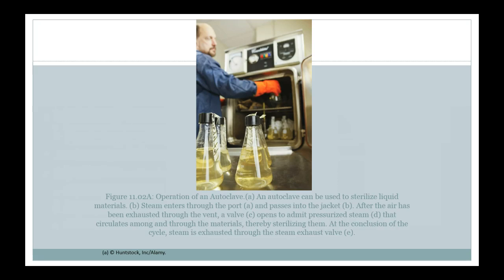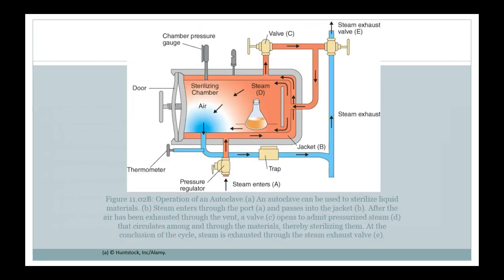This is what an autoclave looks like — a fairly small one, similar to what we have here at Highland. You put vessels, usually glass, inside and close the door. You turn it on, pressure builds up, steam circulates, and everything inside gets subjected to pressure and heat, which kills things off. You need to leave it in for the right amount of time, but it is capable of achieving sterilization.